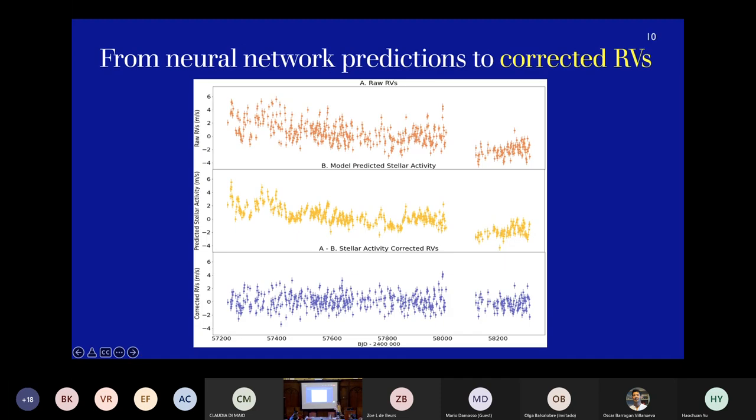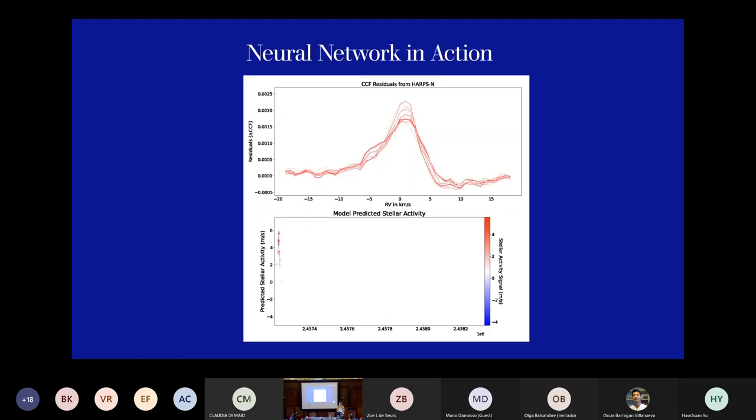So what we then find is for our best model, which you can see here on the top row, you have the raw radial velocities from HARPS North solar observations. These are what the neural network predicts them to be. And so we just subtract that from the top panel to get the stellar activity corrected radial velocities. Here you can see a GIF of the neural network in action. So you see on the top panel what the neural network sees, and then on the bottom, what it predicts the stellar activity contribution to be, corresponding to that residual CCF that I was talking about. It's a little bit slow, so we might go to the next slide.